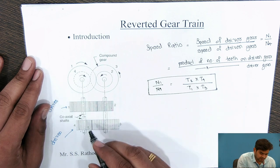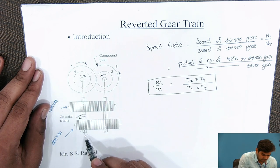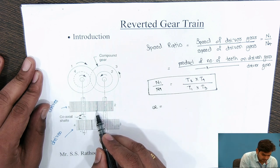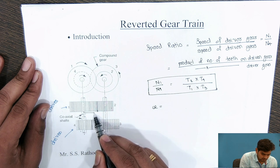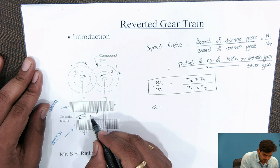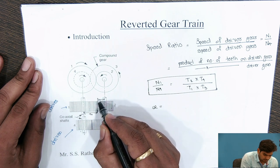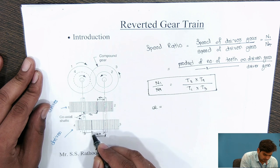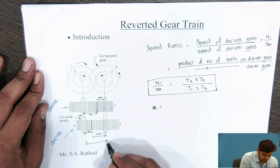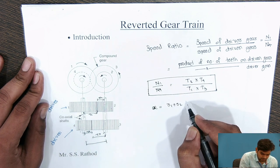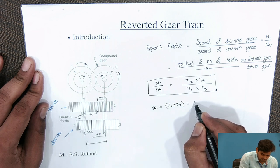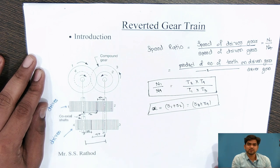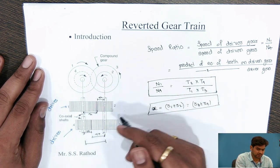The second important formula concerns the distance between the two shafts, x. The pitch circle radii are r1, r2, r3, and r4 for gears 1, 2, 3, and 4 respectively. The center distance condition gives: x = r1 + r2 = r3 + r4. Using just these two formulas, we can find the speed ratio or any geometric parameter of the reverted gear train.